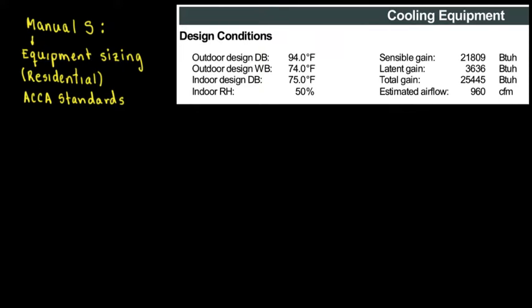I'm going to put this in pink because it's very important. It comes in J, which is the heat load calculation. Then, after you do the heat load calculation, you're going to have Manual S, which is Equipment Sizing. Once you size the equipment, then you're going to go for Manual D, which is duct design. So, you have Manual J, S, and D.